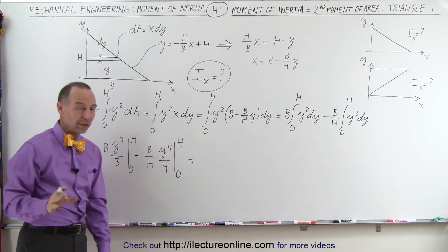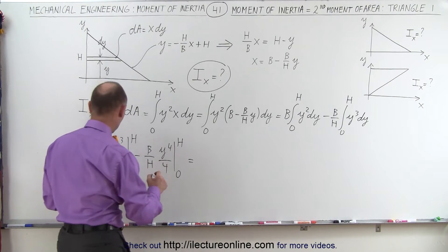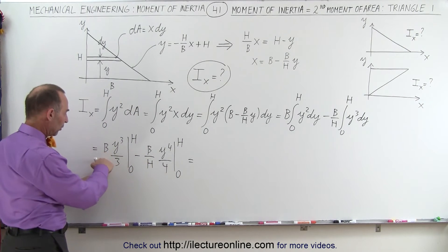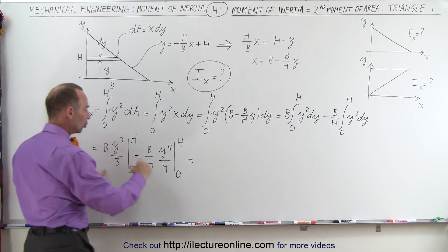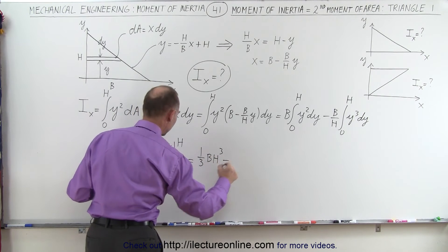Of course, when we plug in the lower limits, we get 0. When we plug in the upper limits, we get the following. On the first one, we'll get 1 3rd b times h cubed,